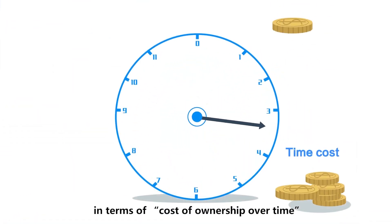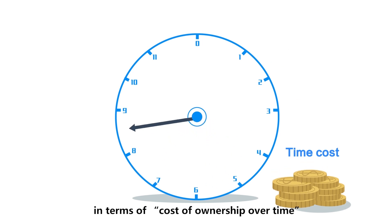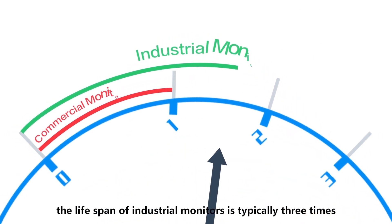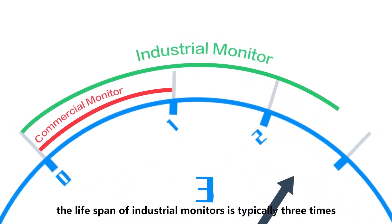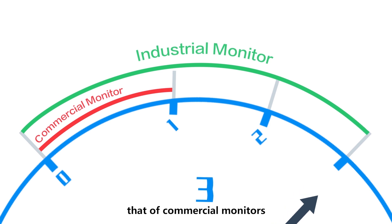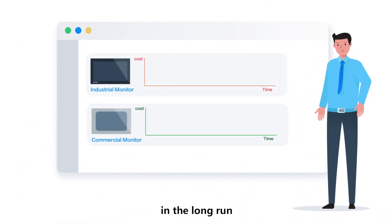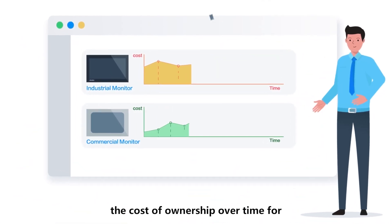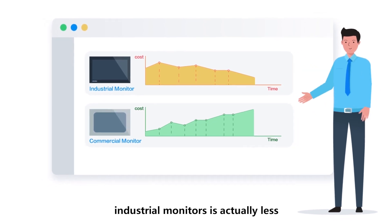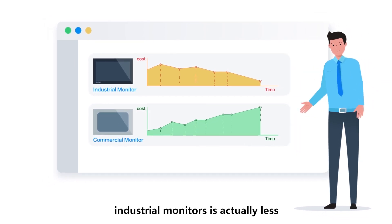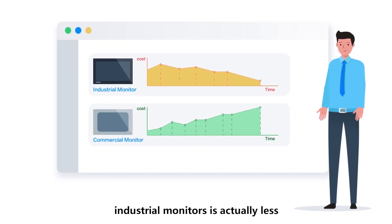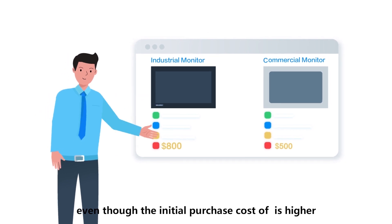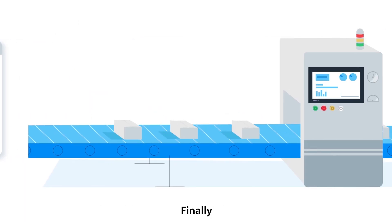Secondly, in terms of cost of ownership over time, the lifespan of industrial monitors is typically three times that of commercial monitors. Thus, in the long run, the cost of ownership over time for industrial monitors is actually less, even though the initial purchase cost is higher.